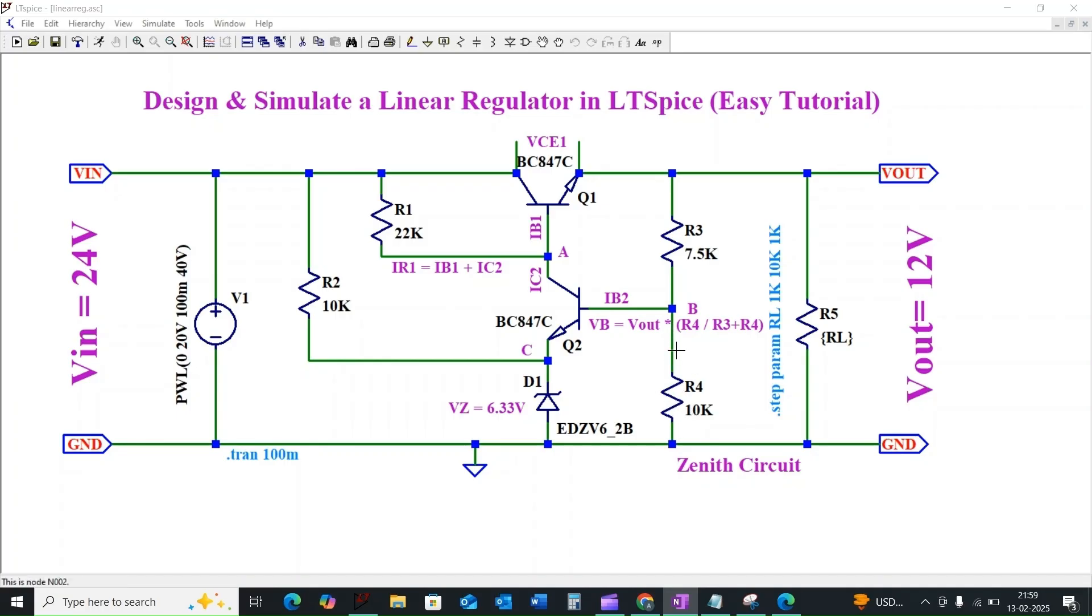The base voltage will consider the voltage across resistor R4 by considering Thevenin's formula: VB equals Vout times R4 divided by R3 plus R4. Here we are considering the zener diode with 6.33 volt, so the voltage at node C will be 6.33 volt. Due to this, transistor Q2 will conduct when the base voltage exceeds 7.03 volt, because we are considering base to emitter voltage of transistor Q2 to be 0.7 volt. This circuit is designed to maintain...